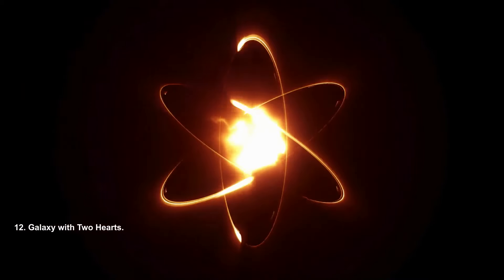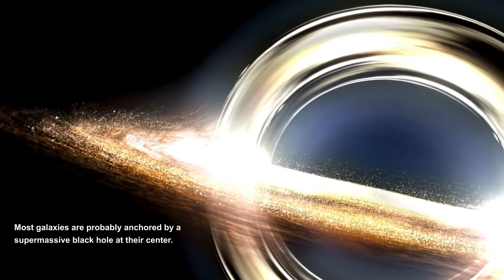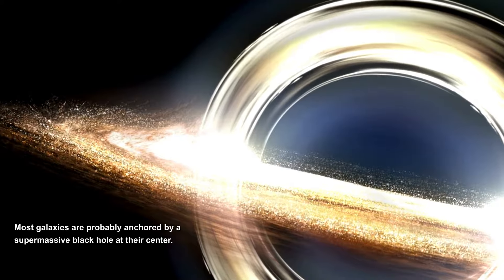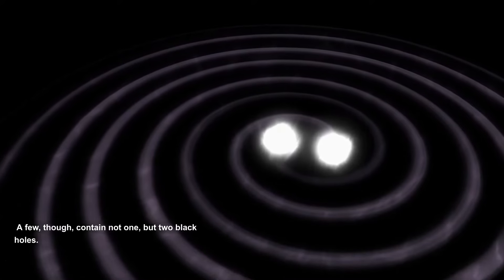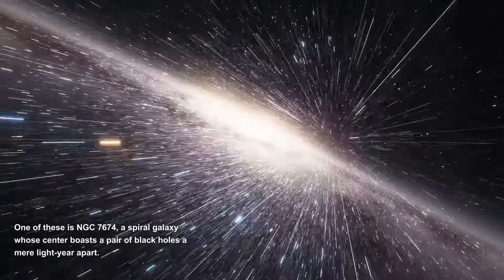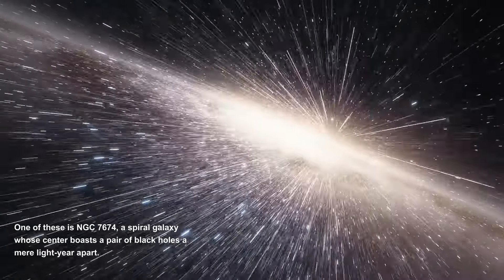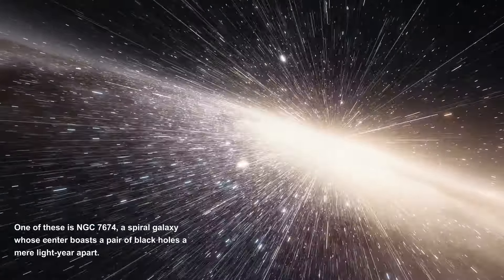Galaxy with two hearts. Most galaxies are probably anchored by a supermassive black hole at their center. A few, though, contain not one, but two black holes. One of these is NGC 7674, a spiral galaxy whose center boasts a pair of black holes a mere light year apart.